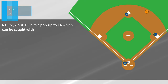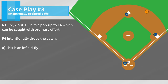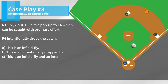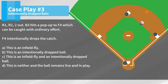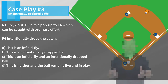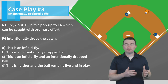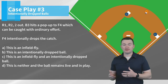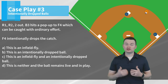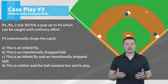Case play number three. R1, R2, two out. B3 hits a pop-up to F4 which can be caught with ordinary effort. F4 intentionally drops the catch. Is this: A) this is an infield fly; B) this is an intentionally dropped ball; C) this is an infield fly and an intentionally dropped ball; or D) this is neither and the ball remains live and in play. The correct answer is D. This is not an intentionally dropped ball and it's also not an infield fly. Because there are two outs, there's no risk of a double play, so neither of those rules can apply.